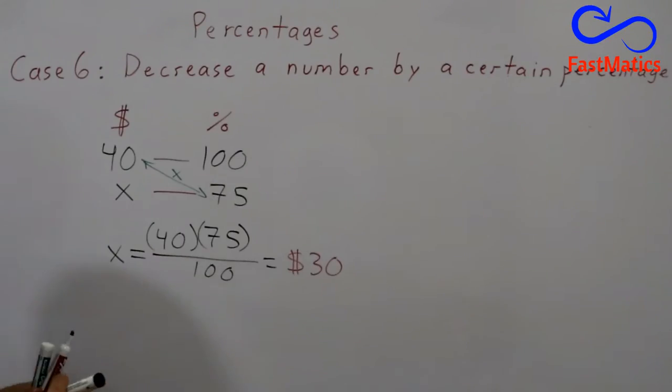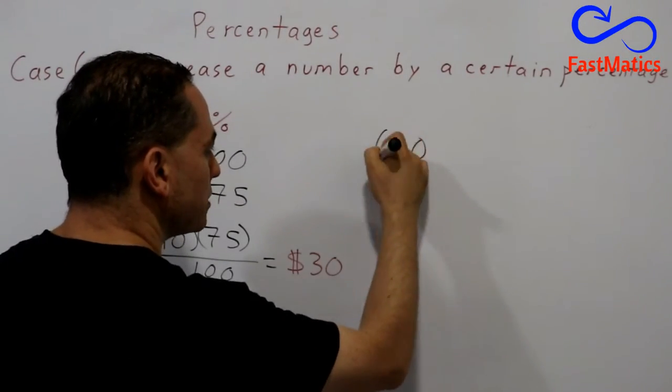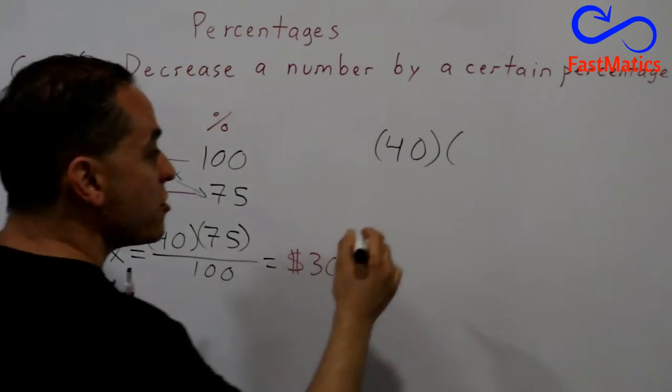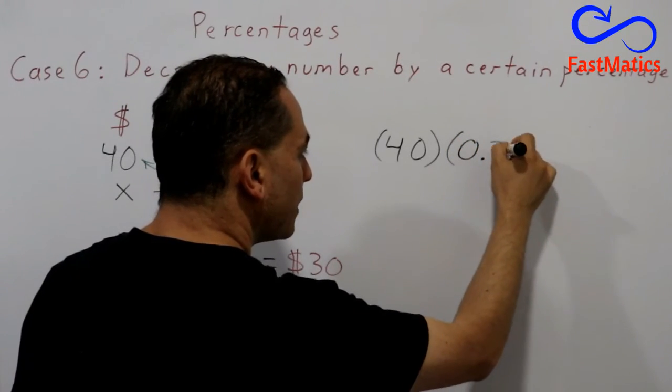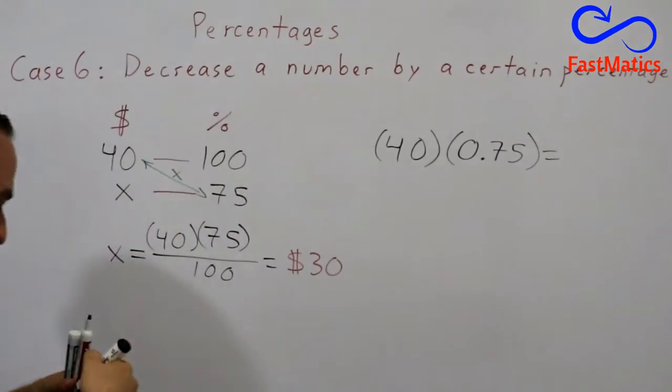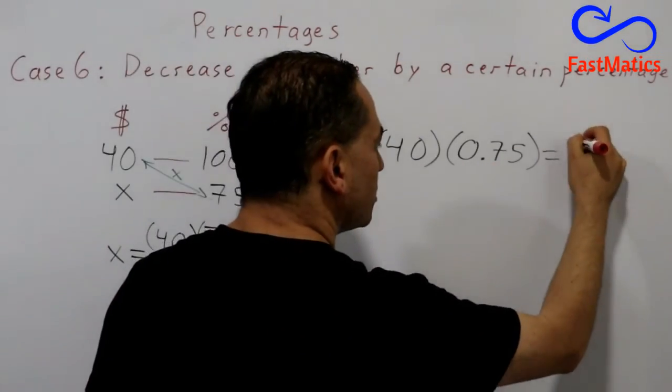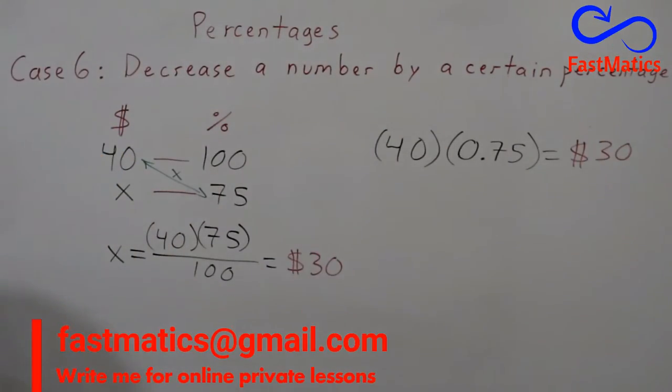We are going to write the number. Remember, you want $40 multiplied by, and remember, the percentage in a decimal form, 0.75. And that is very quick. $30 is the answer.